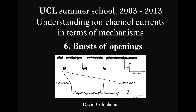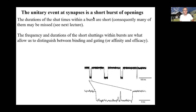Here we go with lecture six about bursts of openings. The point is that the unitary event at a synapse is almost certainly not a single opening but they're short bursts of openings. Furthermore, the durations of the shuttings within a burst may be very short, so many of them are going to be missed. The short shuttings within a burst of openings are critical because they're what allow us to distinguish between binding and gating, or in pharmacological terms between affinity and efficacy.